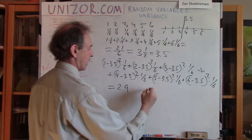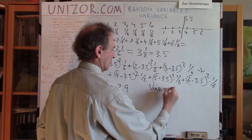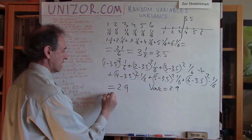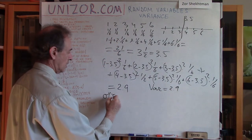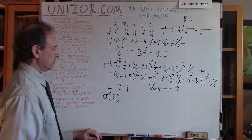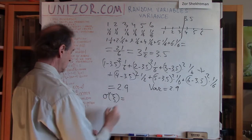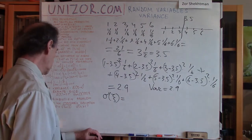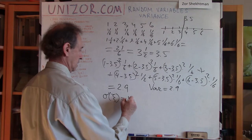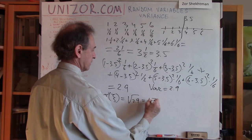Now let's calculate the variance. It's the weighted average of squares of the distances from each value to three point five: one minus three point five squared times one sixth, plus two minus three point five squared times one sixth, plus three minus three point five squared times one sixth, plus four minus three point five squared times one sixth, plus five minus three point five squared times one sixth, plus six minus three point five squared times one sixth, which equals approximately two point nine. So the variance is about two point nine, and the standard deviation is the square root of two point nine, which is approximately one point seven.